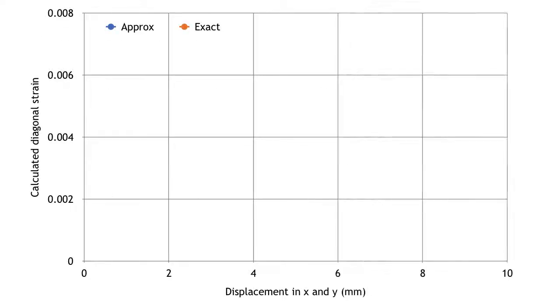We're going to draw this axis. Using the approximation solution, we can look at small values. Of course, we're going to get small strains. Up to 10 millimeters, we get almost 0.008 strain. That's our approximate solution.